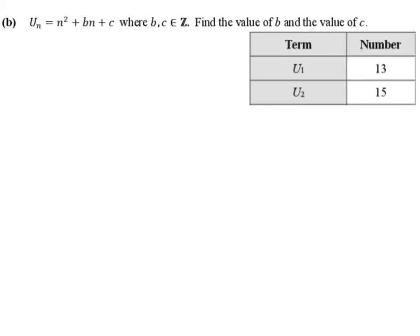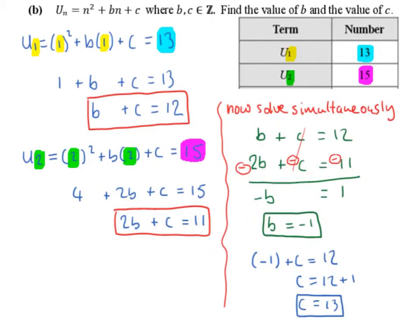Part B. uₙ equals n squared plus bn plus c, where b and c are elements of ℤ, so b and c are integers — positive or negative whole numbers. Find the value of b and the value of c. We're going to take u₁ equal to 13 and u₂ equal to 15, and use both to create two equations that we can solve simultaneously to find b and c.